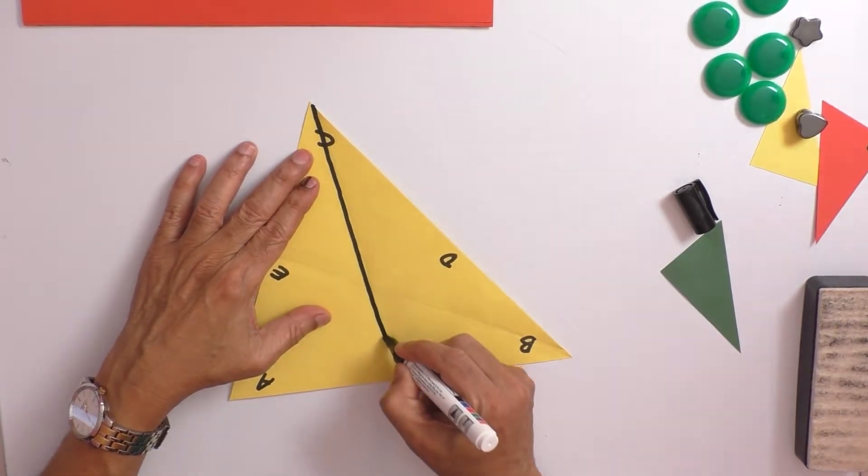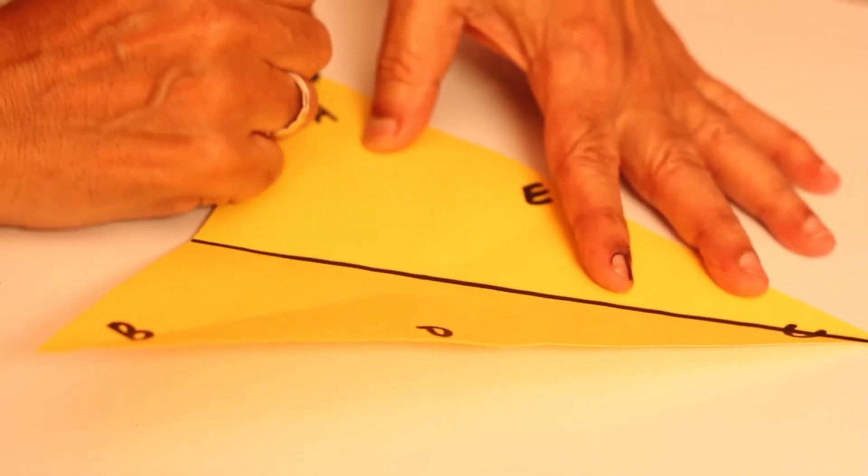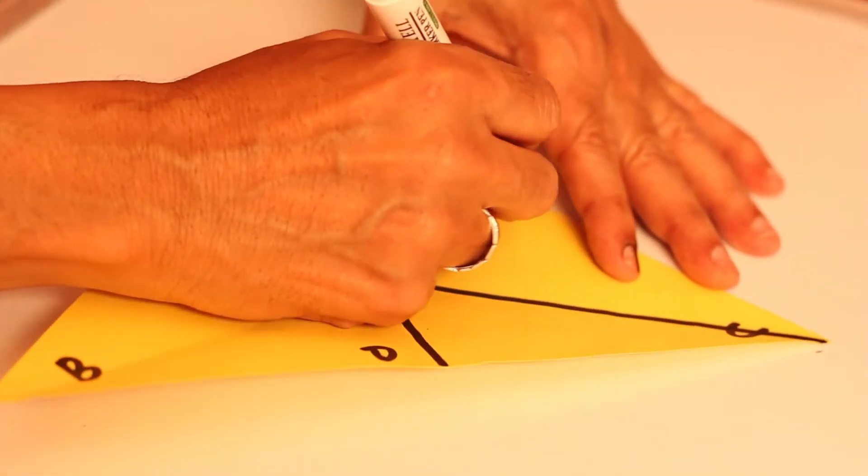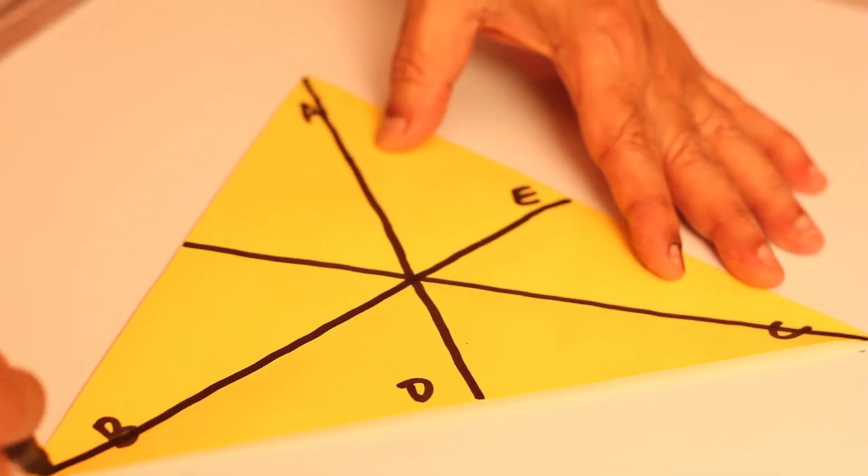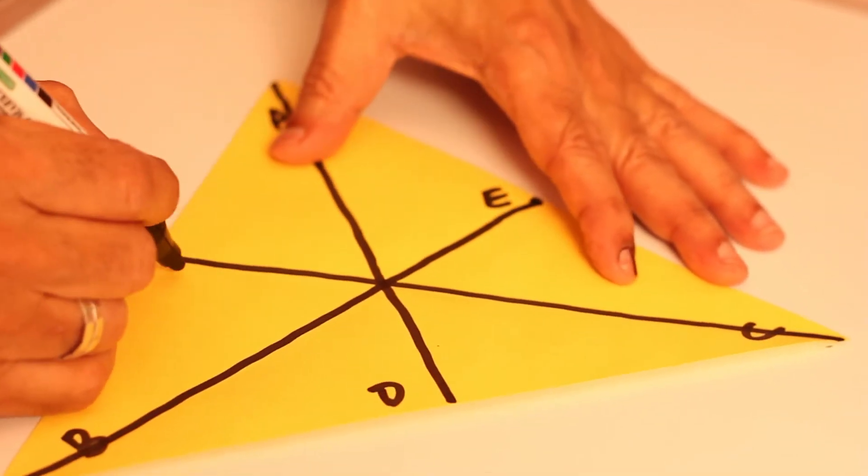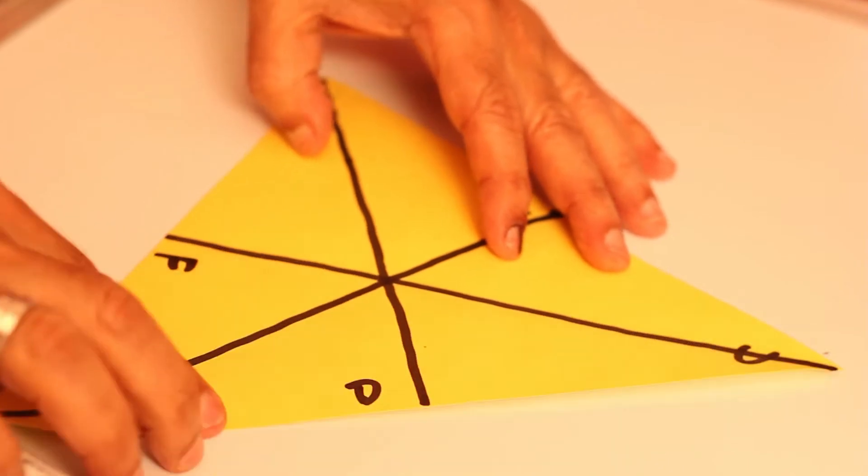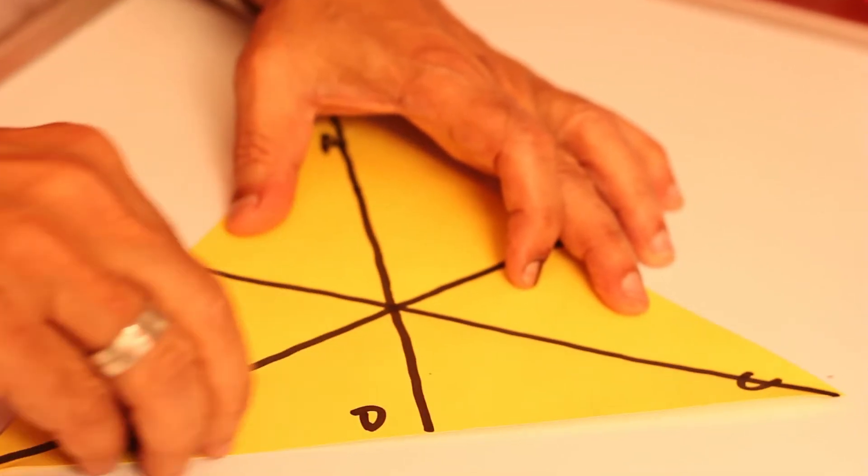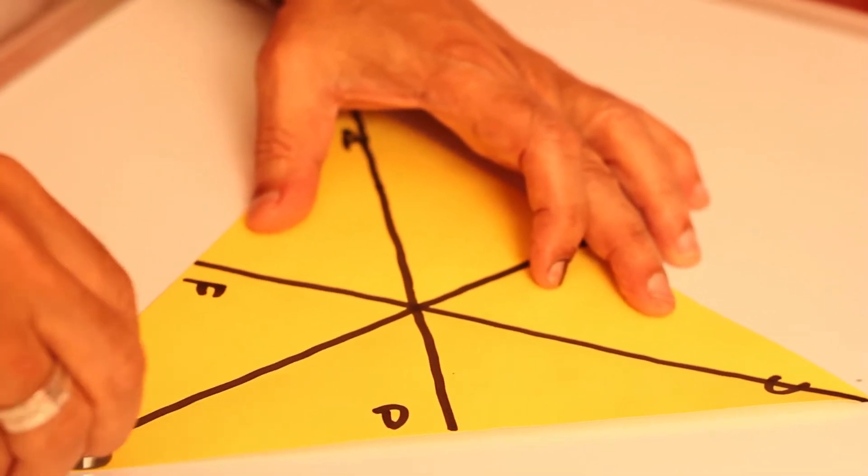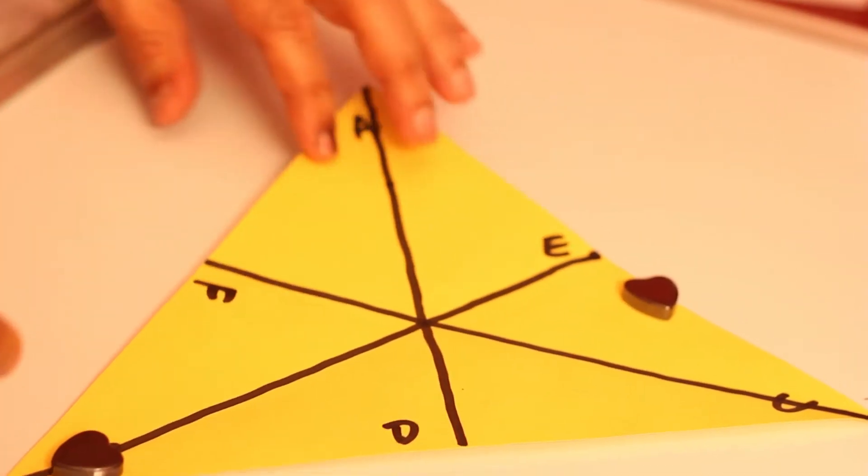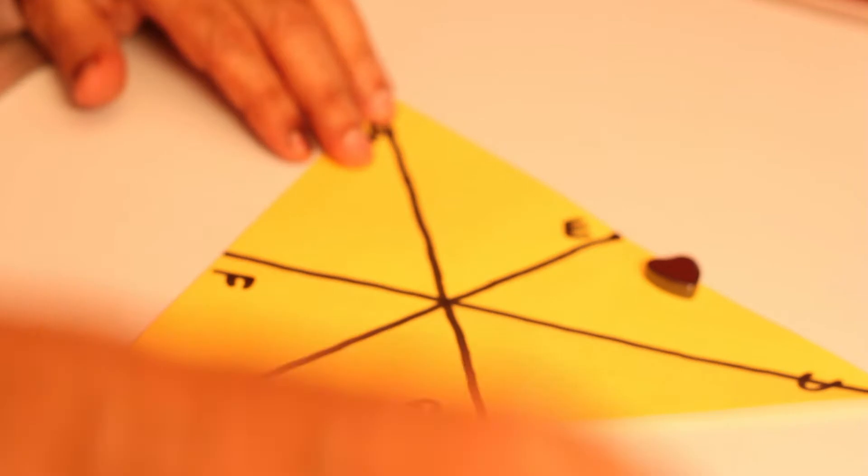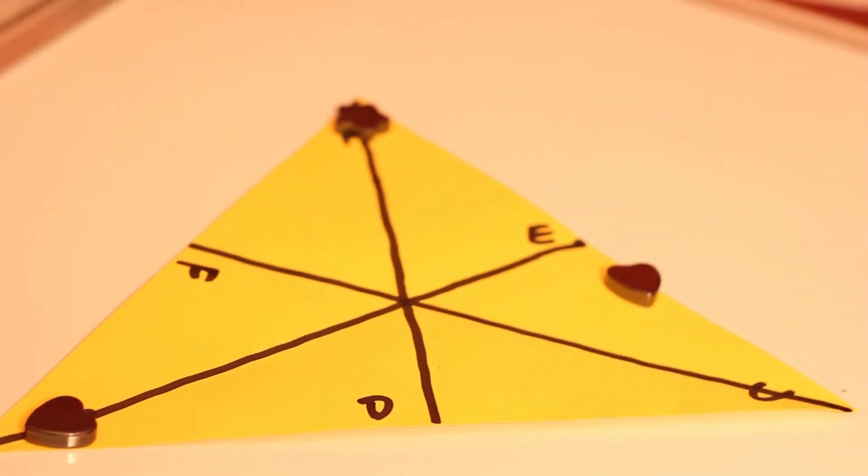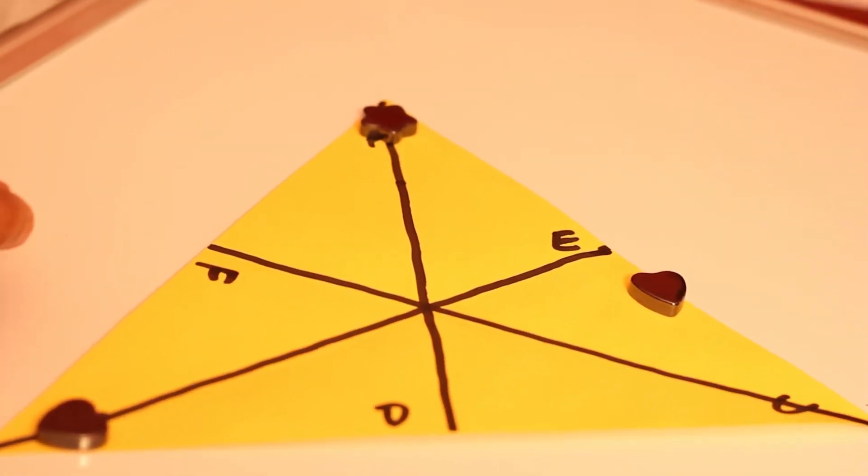Now we have seen that there are three medians: AD, BE, and CF. Now the important idea here is to prove that the centroid is dividing the median in the ratio of 2 is to 1. How can we do this?